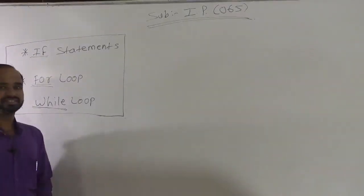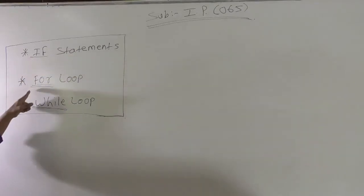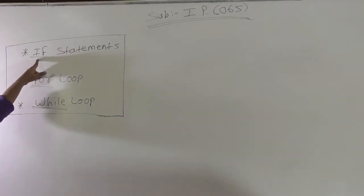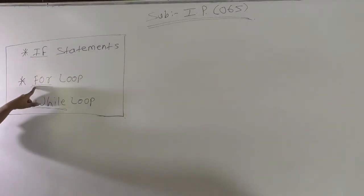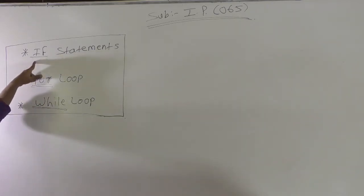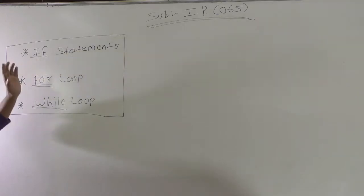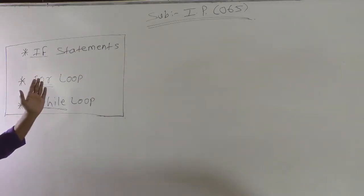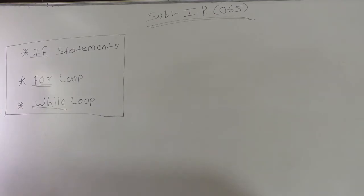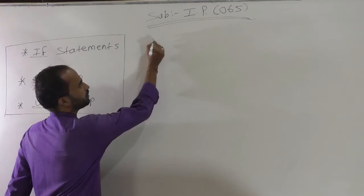Hello, good afternoon students. Today we are going to learn about three statements: the first one is an if statement, the second one is a for loop, and the third one is a while loop. We have already covered the theory about these three points, so today we will see how the if statement, for loop, and while loop work in practice.